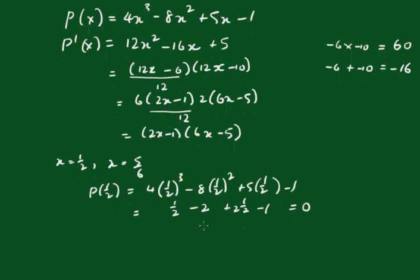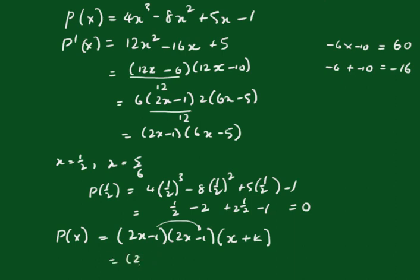So we have that our P(x) must be equal to (2x - 1) times (2x - 1) times, now we'll see here we've got a 4 at the top there, so 2x times 2x gives us 4x², so this has to be an x in here plus some constant k. It's quite clear that this must end in a negative 1, so we multiply these two together we get positive 1, so clearly the k must be negative 1. So now we've factorized all that.